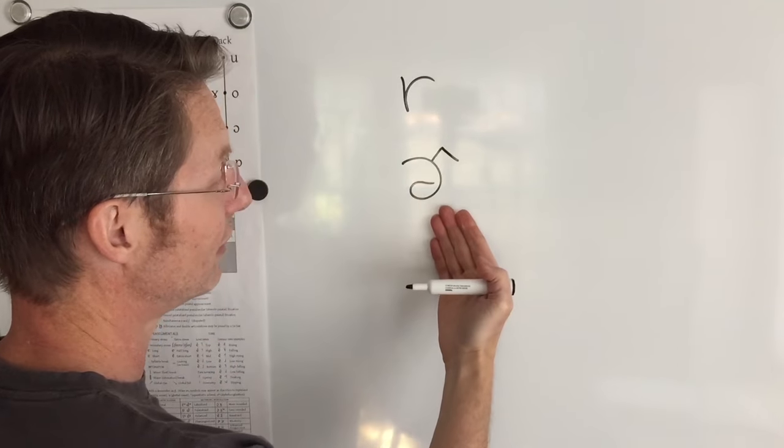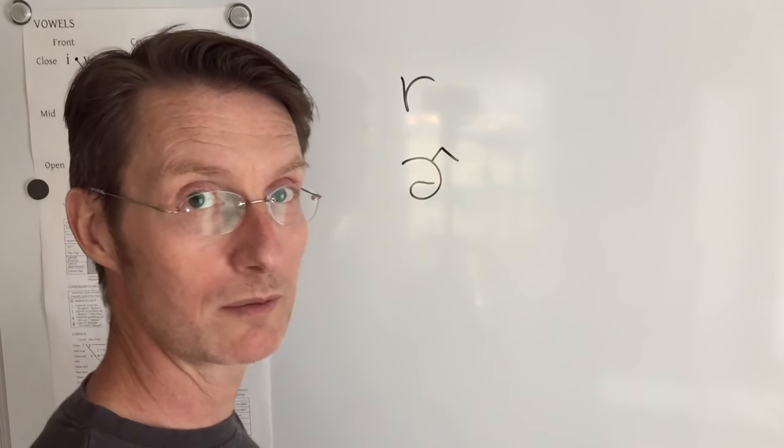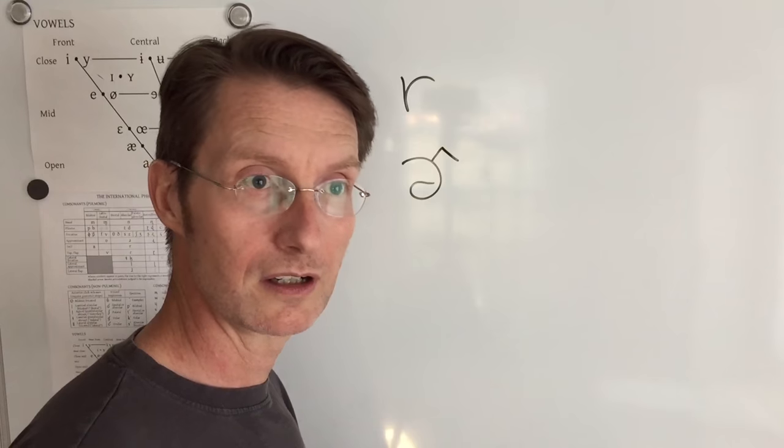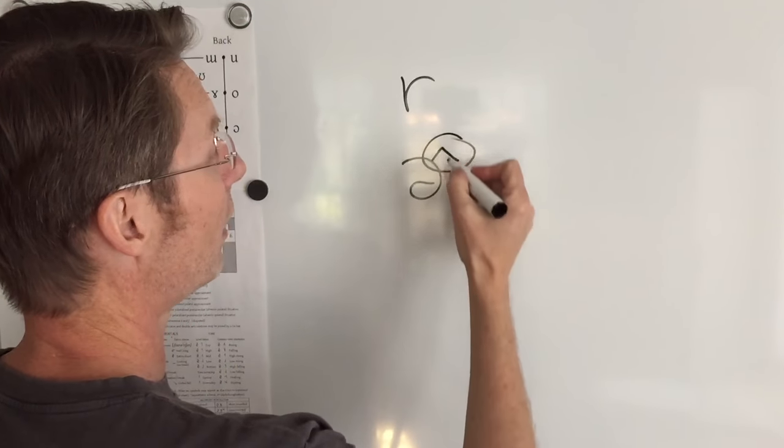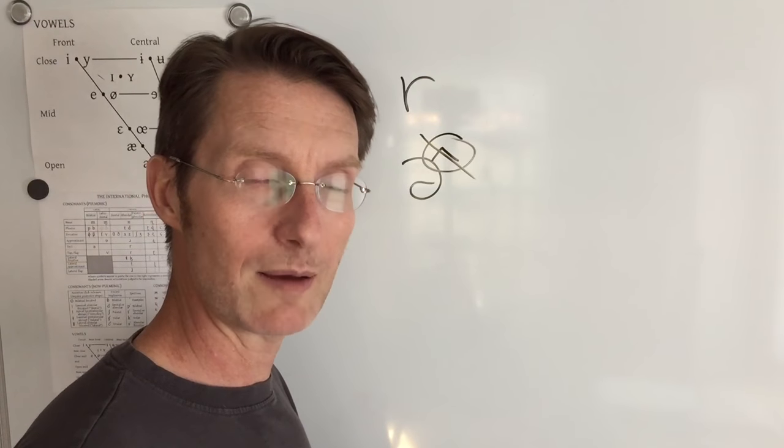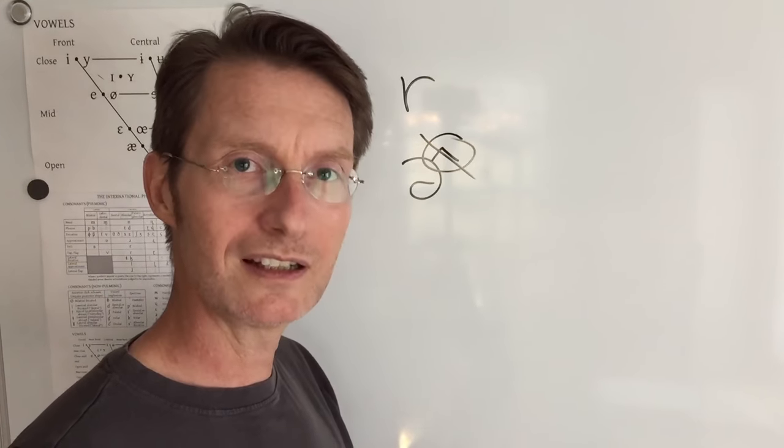So you're adding rhoticity to this schwa sound so it becomes more like er, as in other. Now in some accents when this R-ness gets dropped, other, that becomes a non-rhotic accent.